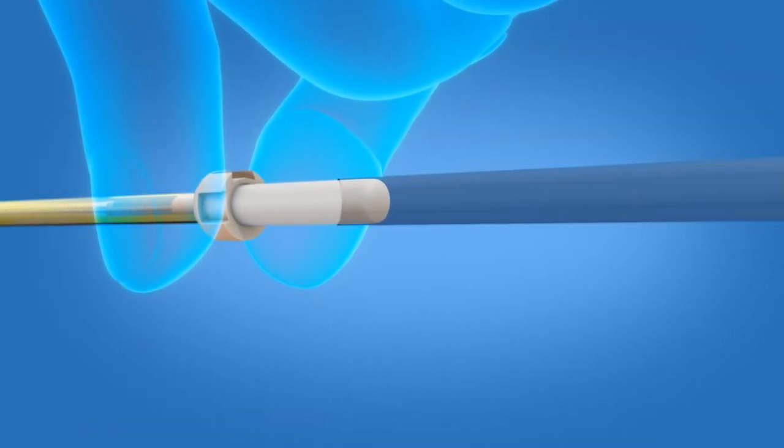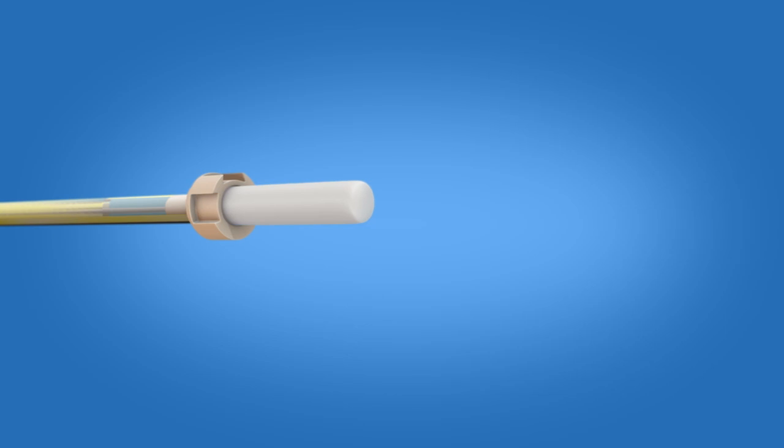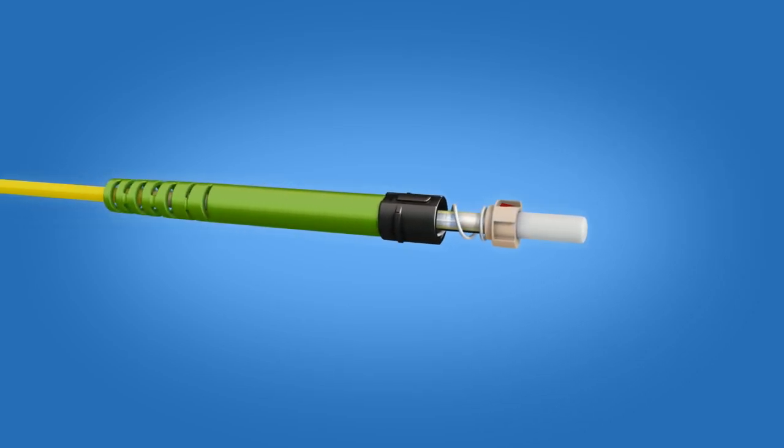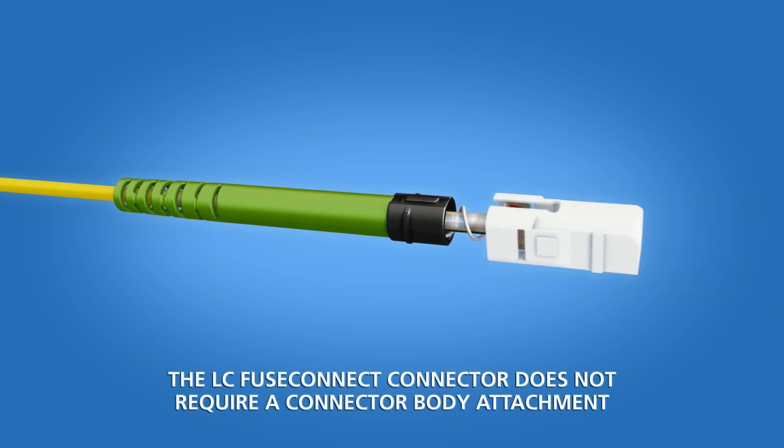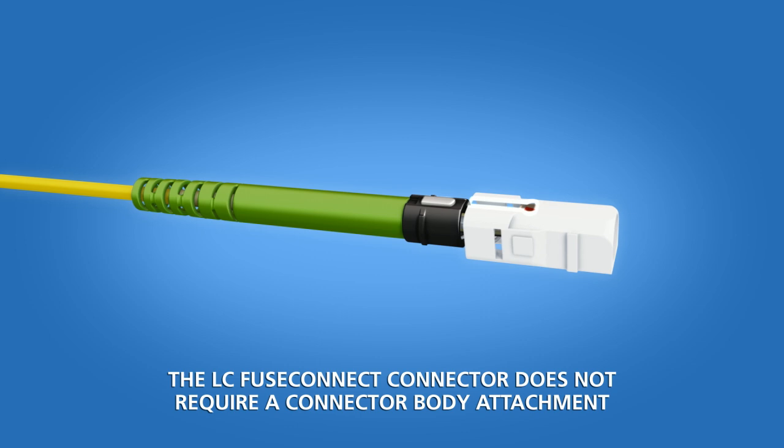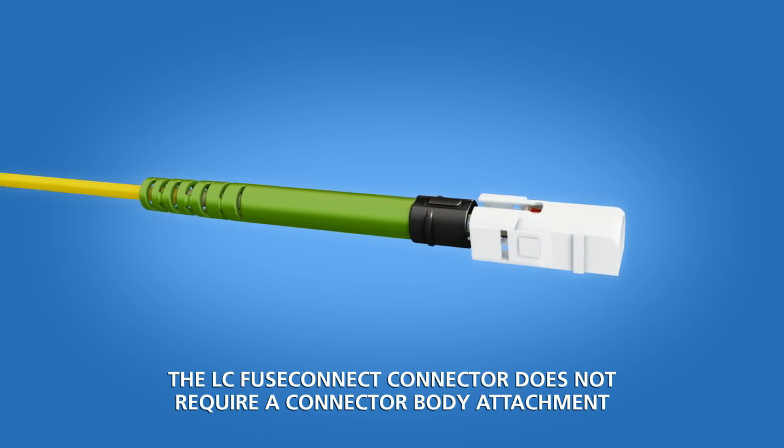Hold the base of the ferrule unit and remove the transfer tubing. Slide the boot unit up to the ferrule. Slide the connector body onto the connector ferrule. Align the opening in the body and the key on the boot. Push until a click is heard.